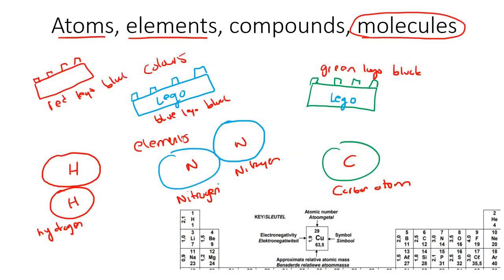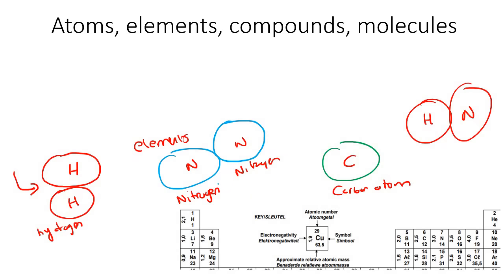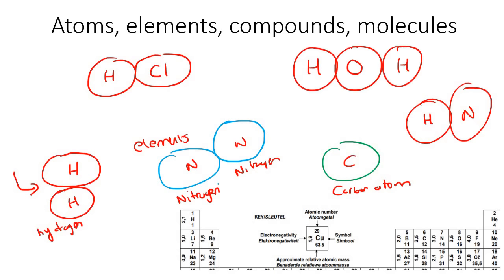Now I'm going to talk about molecules, and we will come back to compounds. What is a molecule? A molecule is whenever you have two or more atoms. So is this a molecule? Yes, we've got two atoms there. Is H and Cl a molecule? Yes, it's got two or more. What about H, O, and H? Yes — as long as it has two or more of these atoms bonded together, then it is a molecule. It doesn't matter if they are the same or different.